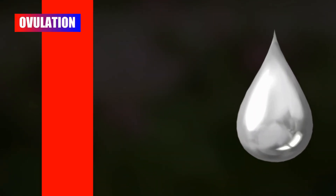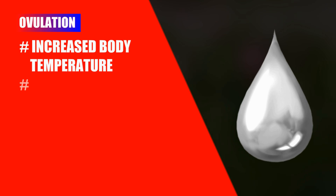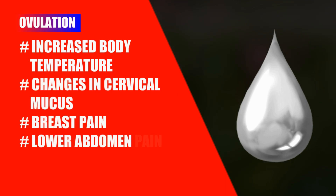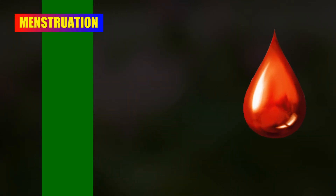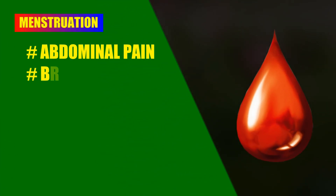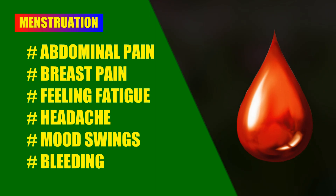Women experience a few common symptoms during ovulation and menstruation. The most common symptoms of ovulation are increased body temperature, changes in cervical mucus, breast pain, lower abdomen pain, and light spotting. The most common symptoms of menstruation are abdominal pain, breast pain, feeling fatigue, headache, mood swings, and bleeding from the private part.